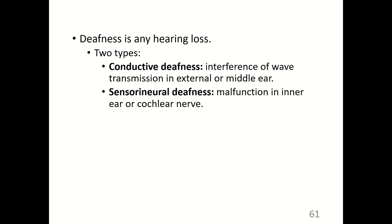Deafness is any type of hearing loss. Conductive deafness is interference of wave transmission in the external or middle ear — for example, excessive earwax muffling the eardrum's ability to vibrate. Sensorineural deafness is a malfunction in the inner ear or cochlear nerve. High-frequency hearing loss is one of the most common types because the hair cells for high frequencies are hit by vibrations first; loud noxious sound waves damage those cells, and this can also lead to tinnitus.